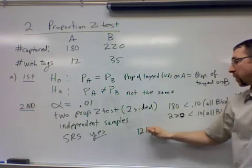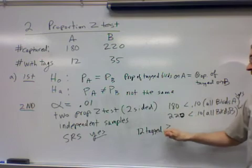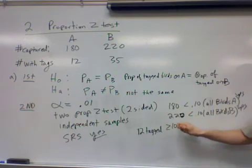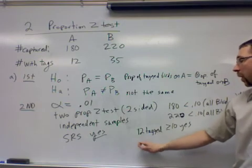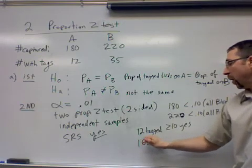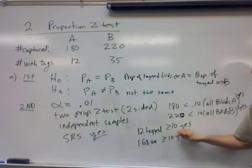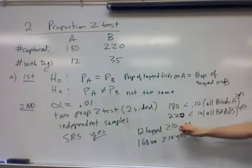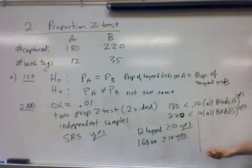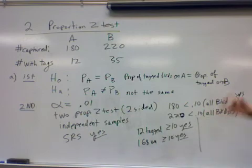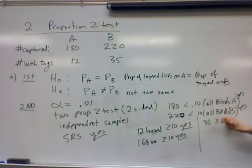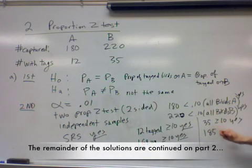Officially writing out the last thing that I said: we've got 12 tagged birds in Island A, that's greater than or equal to 10, so that's a good size sample. We have 168 untagged, which is also greater than or equal to 10. I like using the word 'yes' on these condition checks instead of a check mark—it just makes it seem to the grader that you're actually officially saying yes instead of just putting a little check next to it. And then writing out the other one too: there's 35 tagged and then we have 185 untagged. So it's okay to go on to the next step.